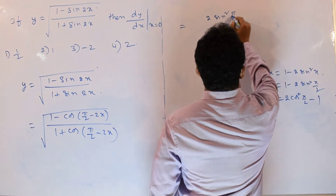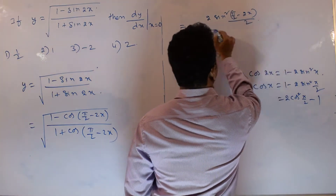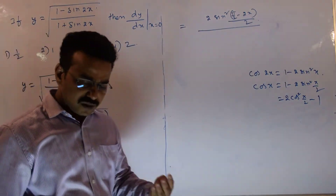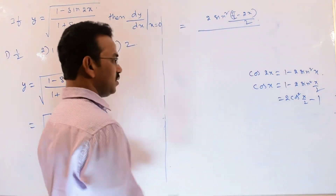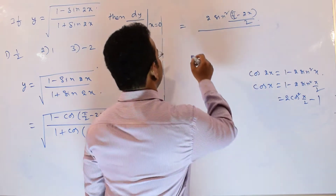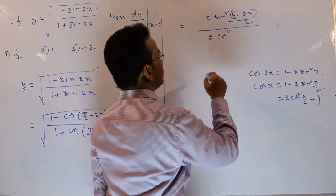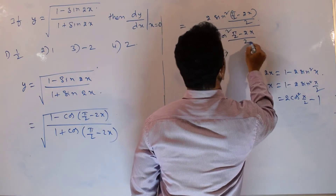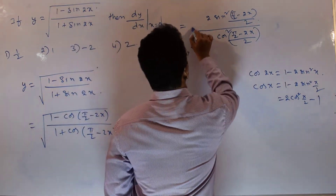In the denominator there is 1 plus cos 2x. I need a minus 1 to eliminate the 1, so it would be better to write the formula 2 cos²(x/2) minus 1. The 1s cancel, giving 2 cos² of (π/2 minus 2x)/2. You have to write both things under the root.